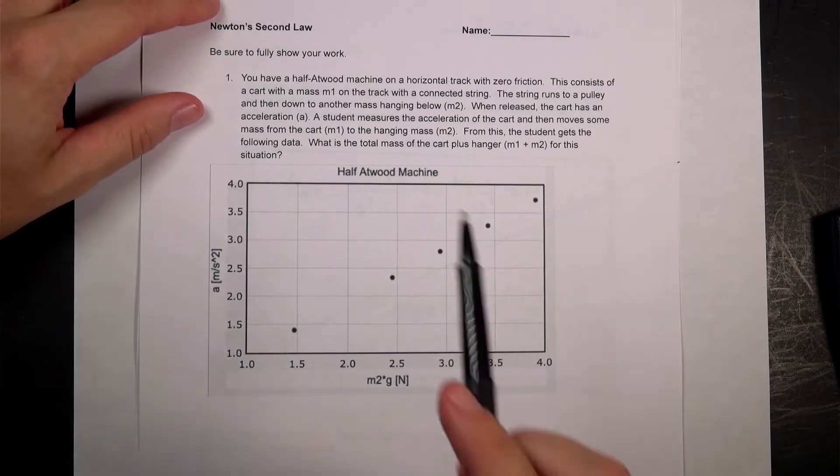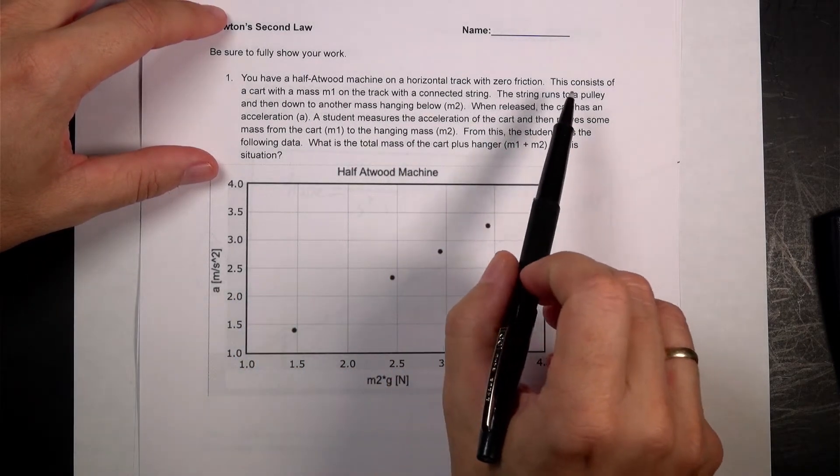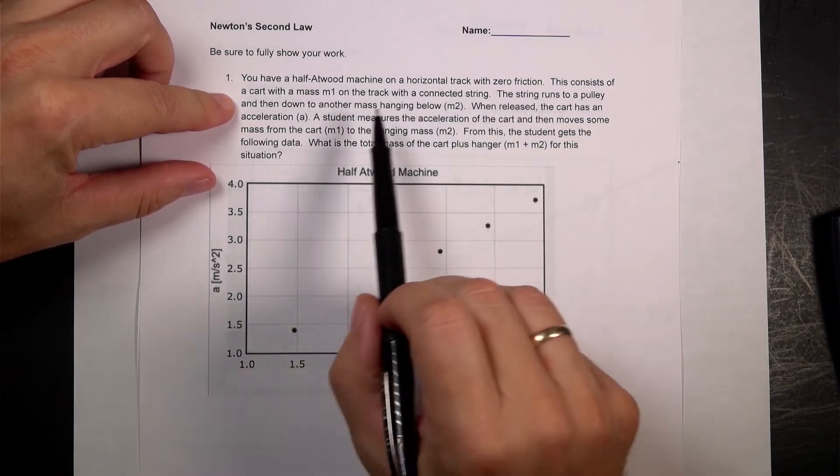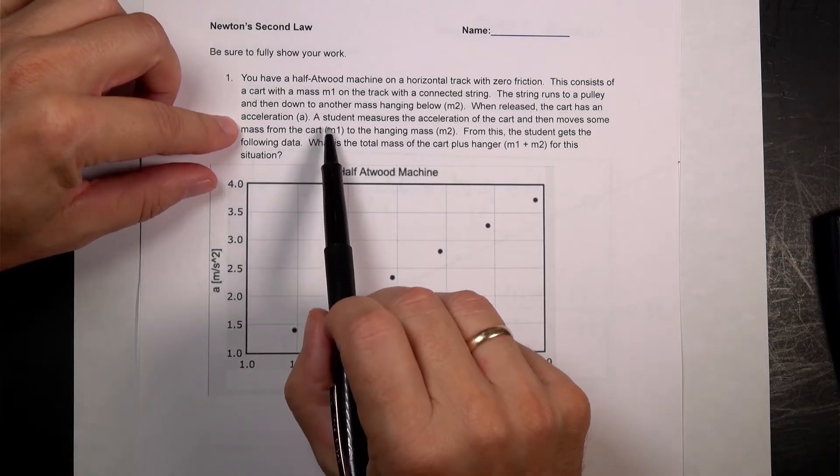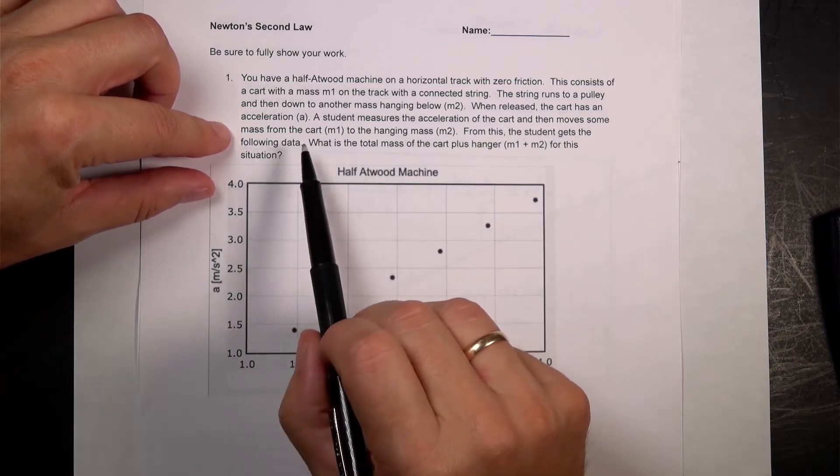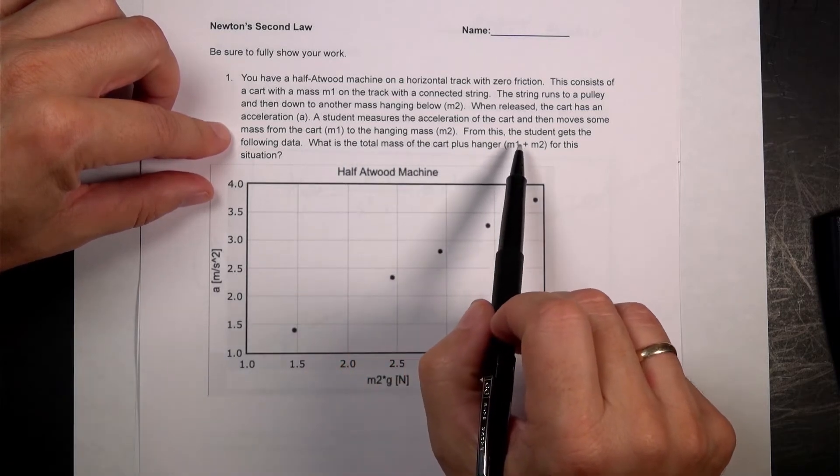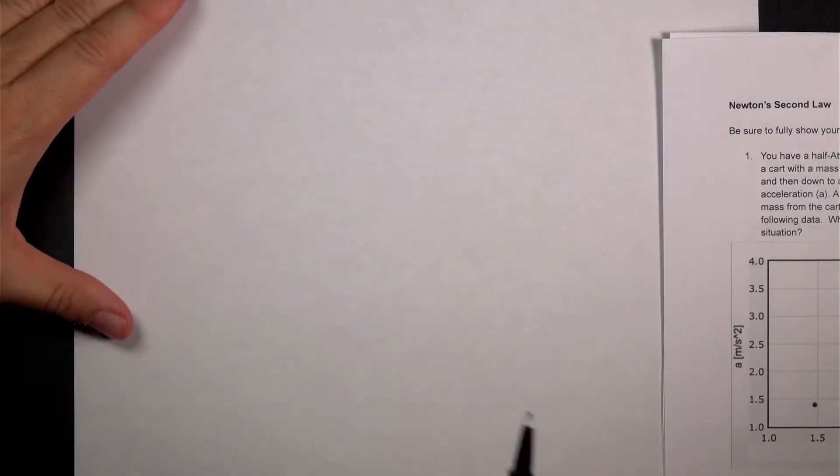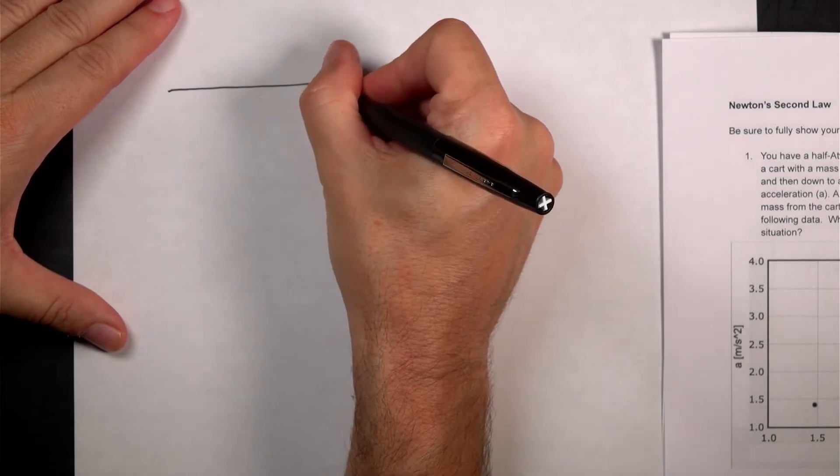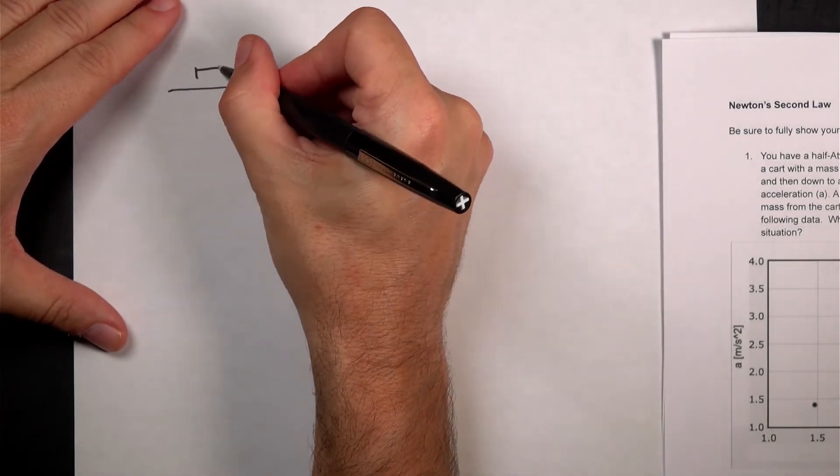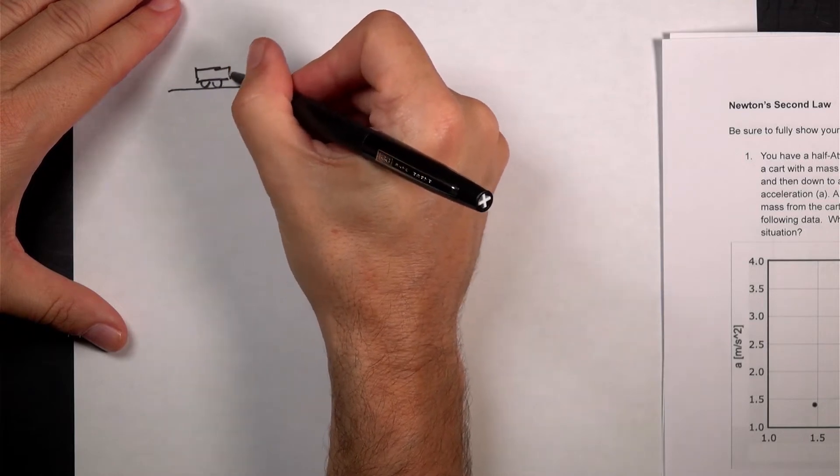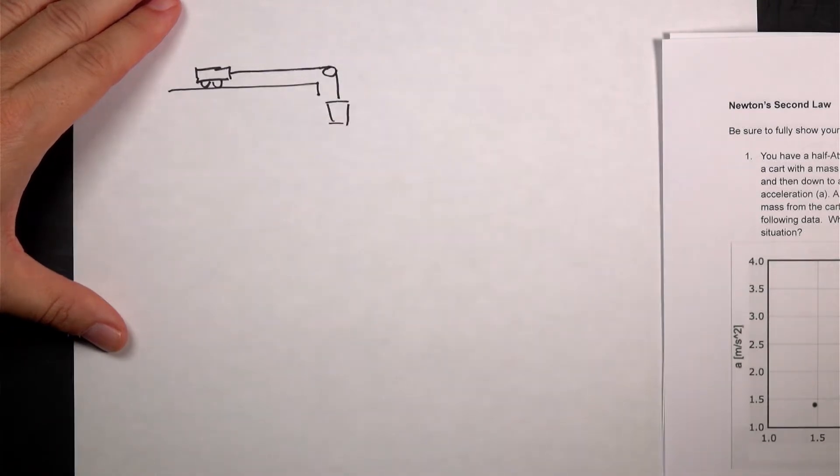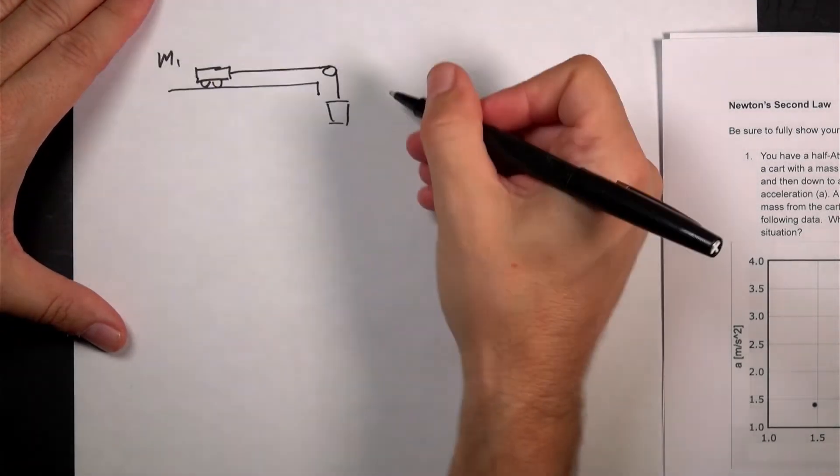Let's look at the second version of the quiz. Now this one is with a half Atwood machine. You have a half Atwood machine, horizontal cart, zero friction, cart of mass M1 on the track connected to a string that runs a pulley down to mass 2. When released, the cart has an acceleration A. So let me really quickly derive the simple version of this half Atwood machine. So here I have a table, here I have a cart, and then I have a string going to a pulley, and then a mass over here. And I call that M1 and this M2.